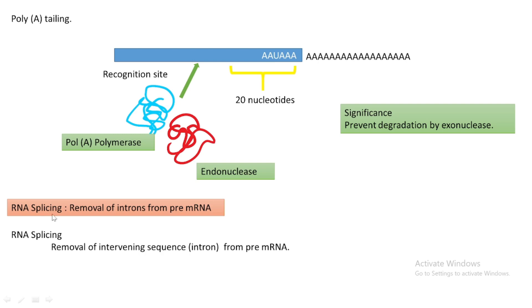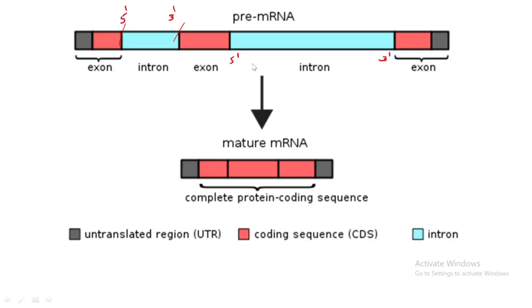Splicing means removal — removal of unwanted portions, the unwanted sequences called introns from the pre-mRNA. The definition of RNA splicing is simply the removal of intervening sequences, or introns, from the pre-mRNA. I will show you a picture of a premature mRNA. In this picture, you can see some blue portions — these indicate the unwanted or intervening sequences called introns.